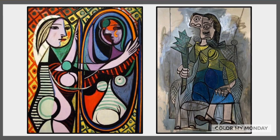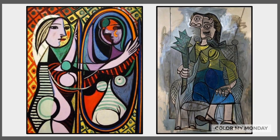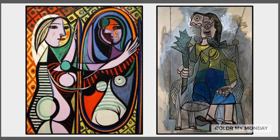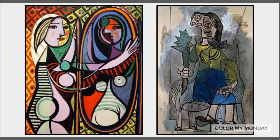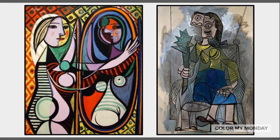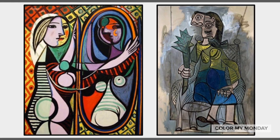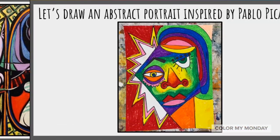Some shapes are geometric. Those are shapes with names like circles, squares, and triangles. And some shapes are organic. Those are shapes that can be found in nature and don't necessarily have a name.